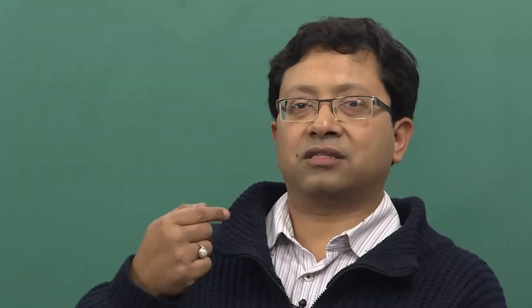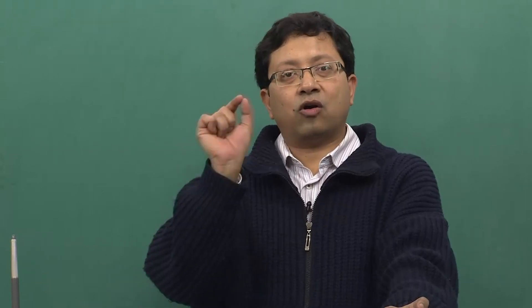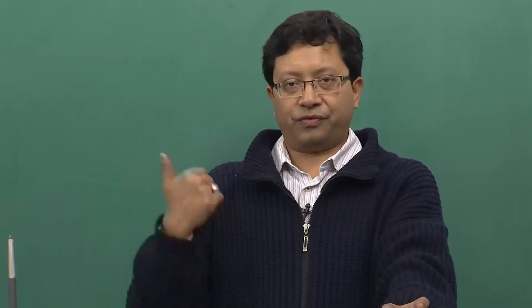We started this problem at the end of the thirtieth class, continued in the thirty-first class, and in this thirty-second class we will try to wrap up the discussion. The overall job sequence of crashing is now being done on three accounts marked in red — activities C, D, and E — simultaneously by one day each, causing a decrease from sixteen to fifteen days.